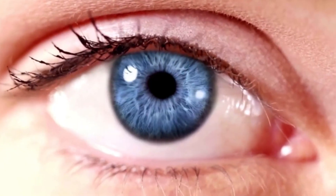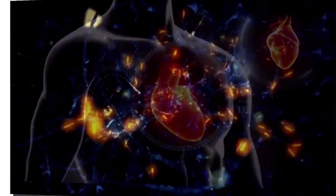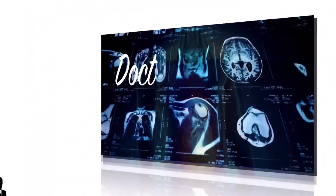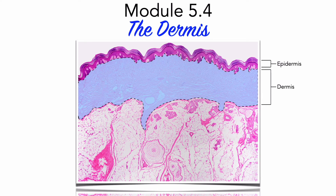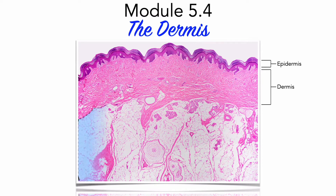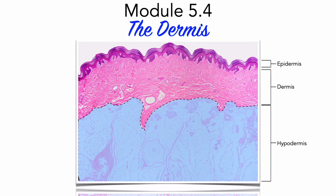The dermis lies sandwiched between epithelial tissue above, namely the epidermis, and a layer of fatty connective tissue beneath, appropriately called the hypodermis. The hypodermis is also known as the subcutaneous membrane since it rests beneath the cutaneous membrane, which is the integument or skin. The hypodermis technically is not part of the integument. We will, however, take time in module 5.5 to examine its key characteristics and functions, given its intimate relationship with the dermis.